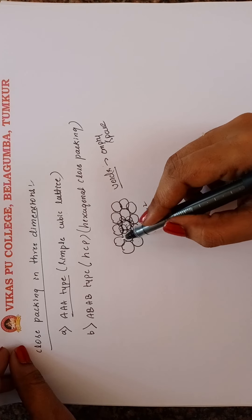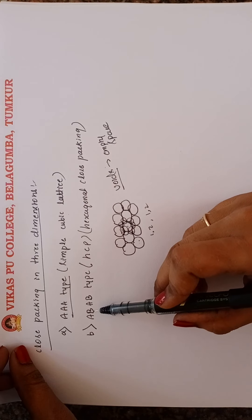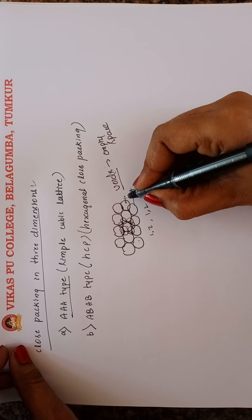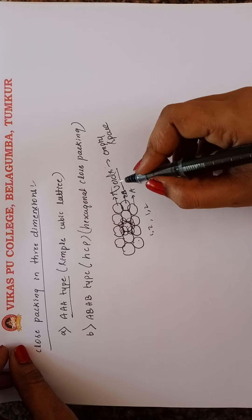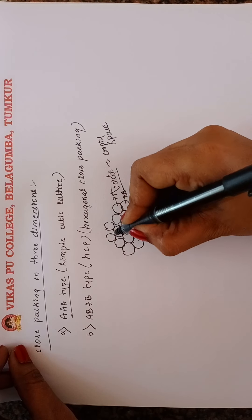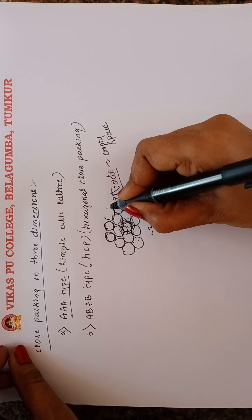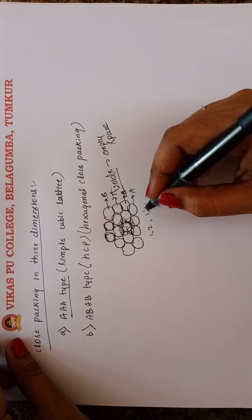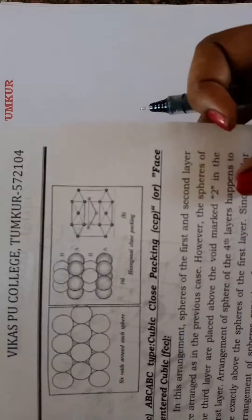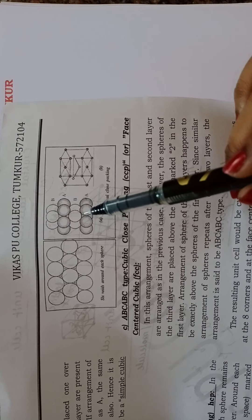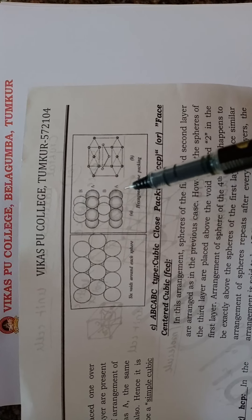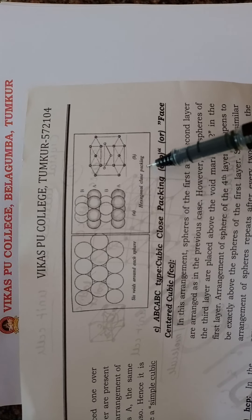You can observe in the diagram that if the first layer is A, the second layer becomes B, then A again, and so on — giving the ABAB pattern. This type of packing is called hexagonal close packing.